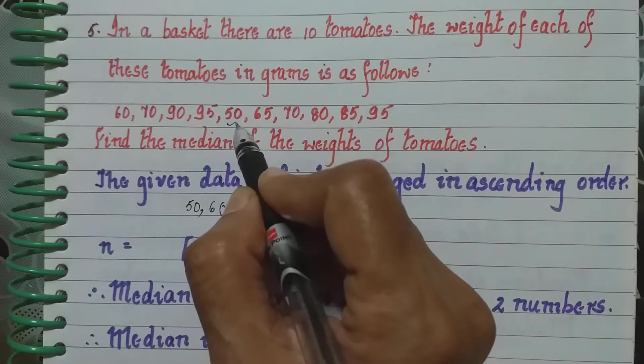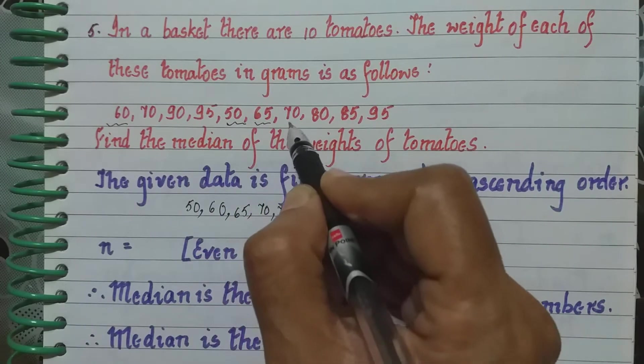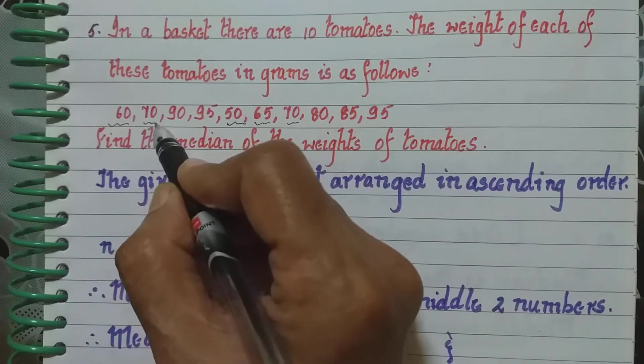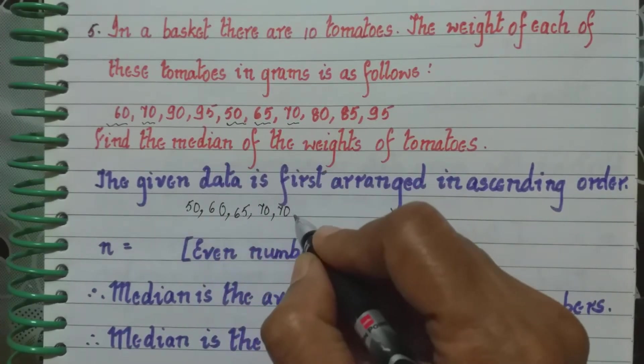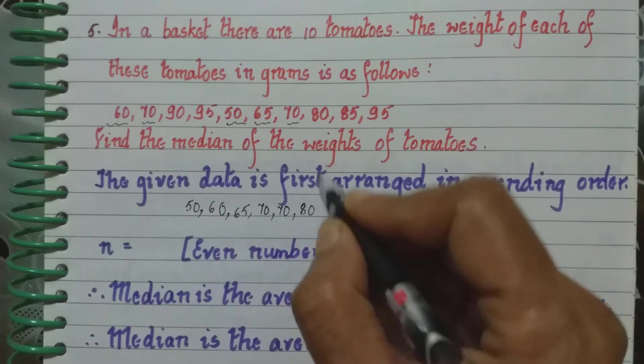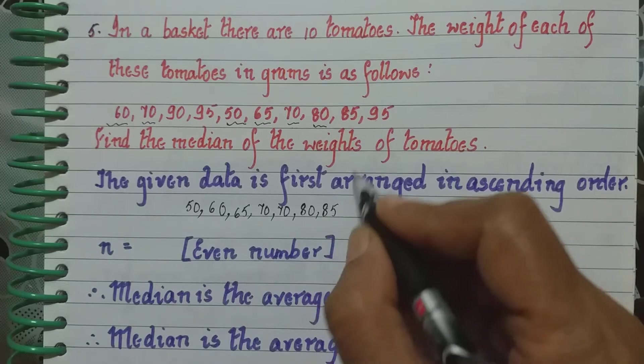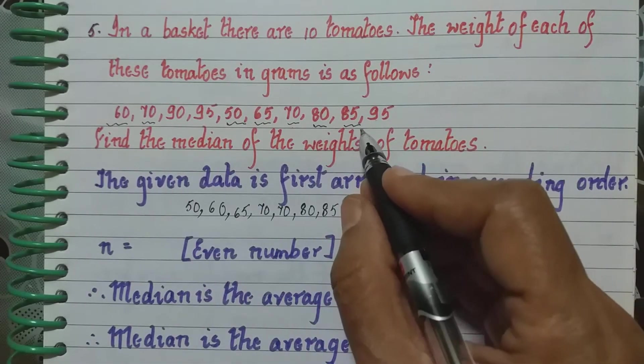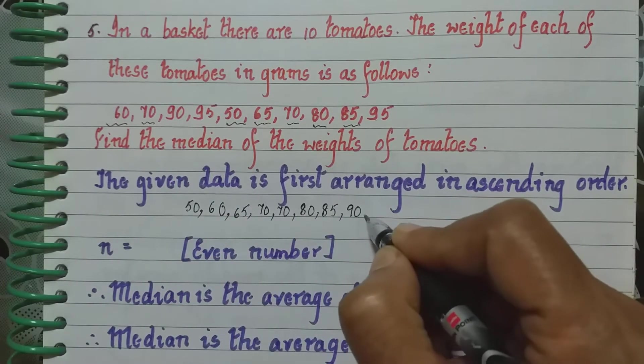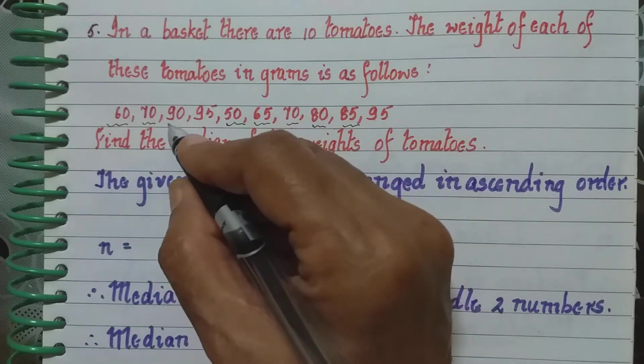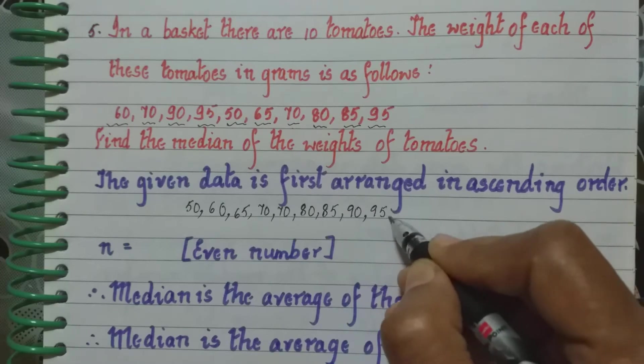Let us underline what is done. So this 50, 60, 65, 70, 70 is done. Then we do not have 75. Next we have 80 and then 85. Then we have 90 and 95 twice. So we will write 95 twice.